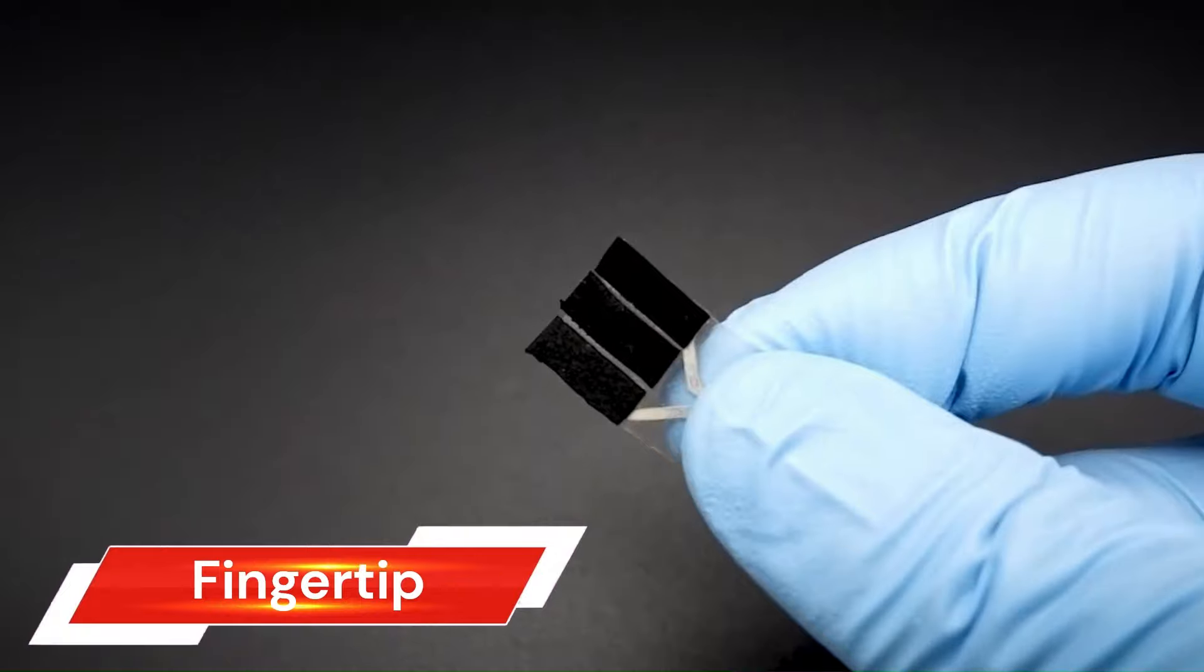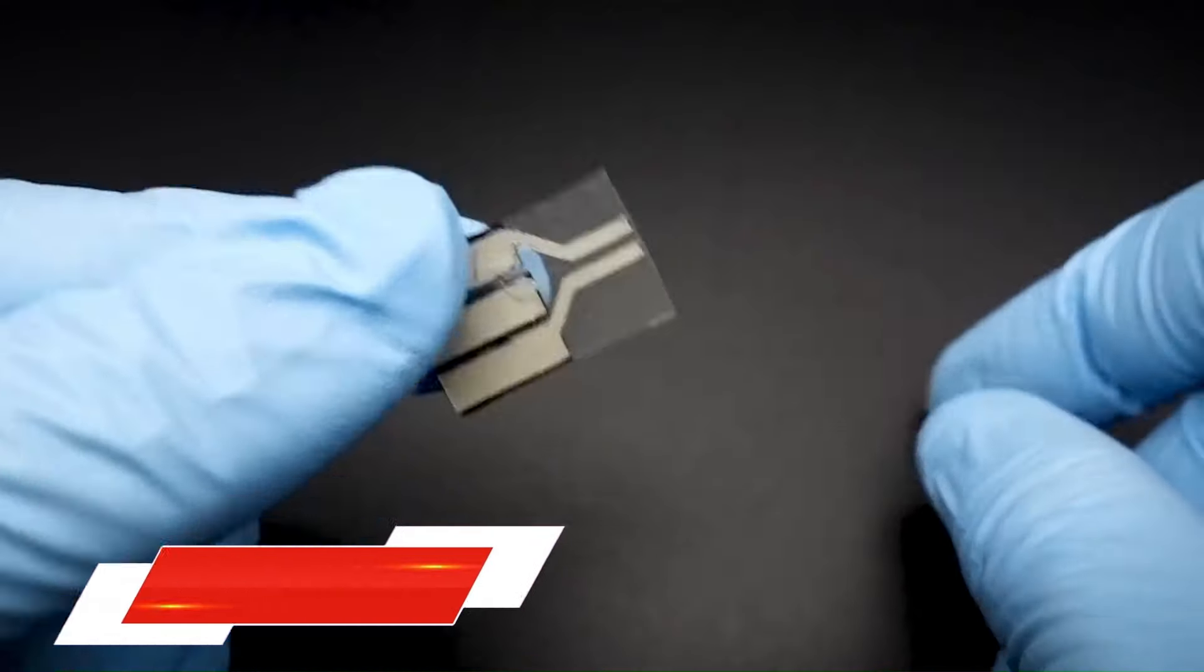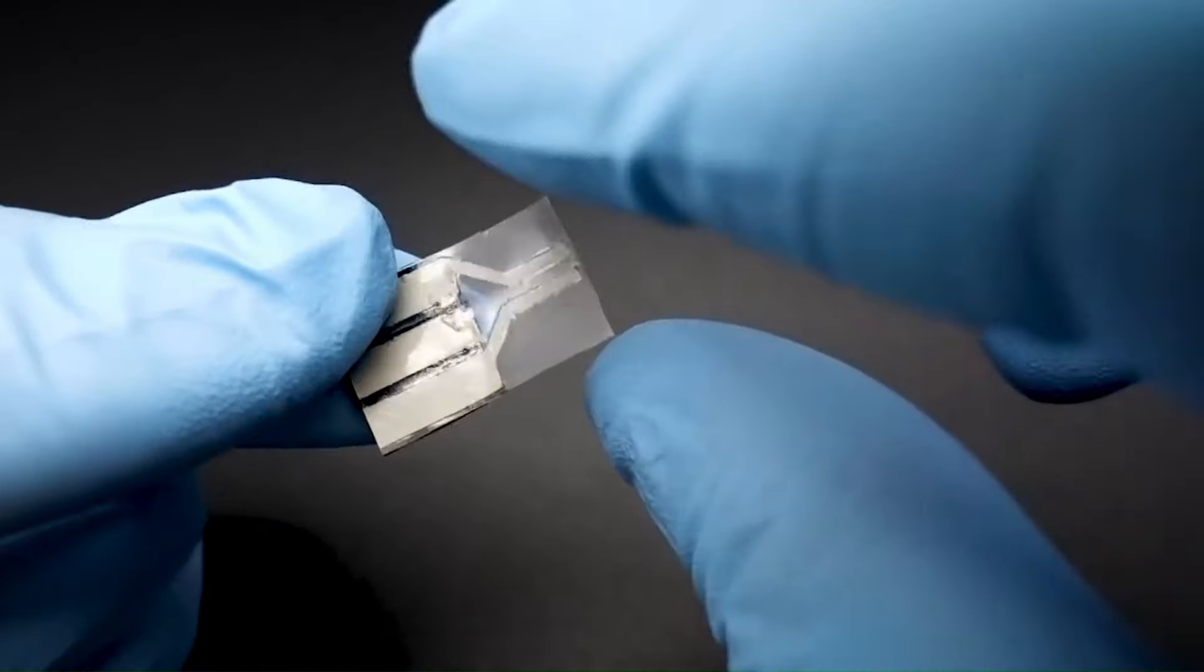Fingertip wearable sweat-powered wearable. This thin, flexible strip can be worn on your fingertip and generates small amounts of electricity from your sweat. It works even when you're not moving, making it a potential game-changer for powering small electronics and sensors.